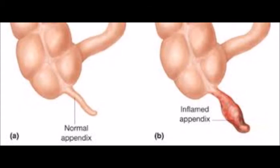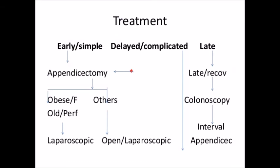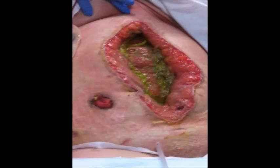Treatment of appendicitis is either laparoscopic or open, and for late presentations we can do interval appendectomy. Problems encountered during appendectomy include: the incision being too small, finding a normal appendix, encountering a gangrenous appendix involving the base, or the appendix not being found. Incidental appendectomy refers to removal of a normal appendix during laparotomy performed for another condition.